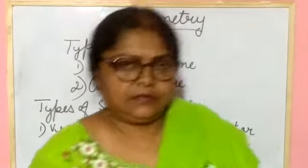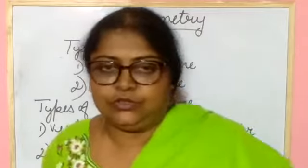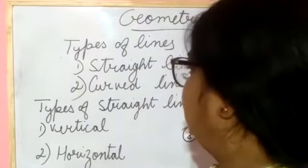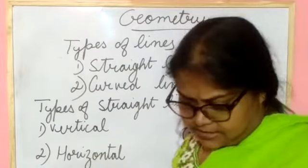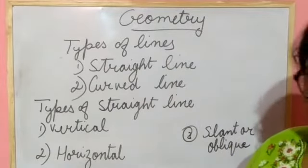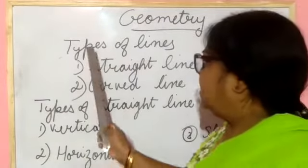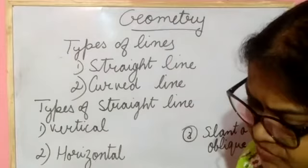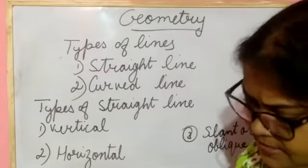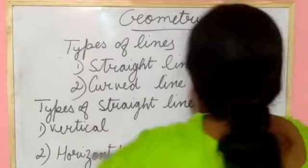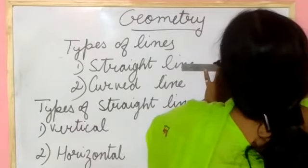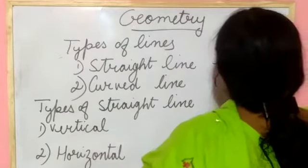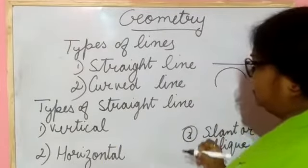Hello everyone, welcome back to class. Today in geometry chapter you will know about the line. Last class I defined what is a point, what is a line, line segment, and ray. About line, you will know two types: one is the straight line and another one is the curved line. A straight line means if you draw a line like this, this is a straight line.